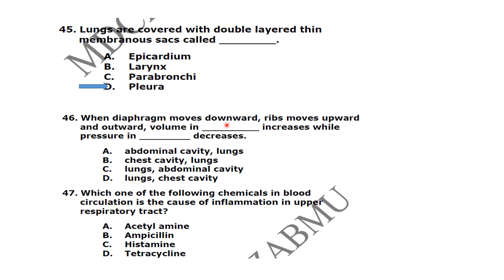When the diaphragm moves downward and ribs move upward and outward, the volume in the chest cavity increases while the pressure in the lungs decreases. Option B is correct — this is the definition of inhalation.